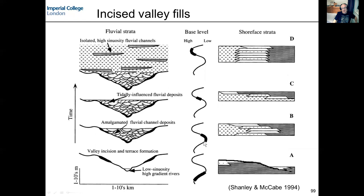In the second stage, relative sea level reaches its lowest point and begins to rise slowly — the lowstand systems tract. The valley starts to infill with fluvial deposits. Individual river channels are much smaller than the overall valley and are densely stacked, cutting into one another to form a multi-story (vertically stacked) and multilateral (laterally stacked) series of channel-fill deposits. At the shoreline, the system is aggrading — this corresponds to the lowstand wedge.